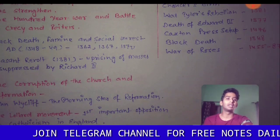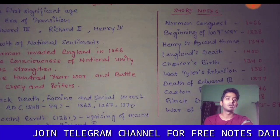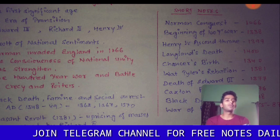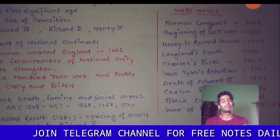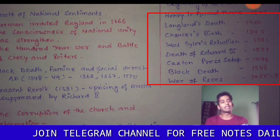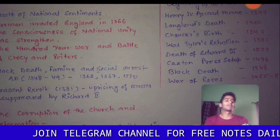Now here you can see some short notes. Norman Conquest happened in 1066. The beginning of the Hundred Years' War was 1338. Henry IV ascends to the throne in 1399. Langland's death happened in 1400. Chaucer's birth was 1340. Wat Tyler's Rebellion, or the Peasant Revolt, was 1381. Death of Edward III was 1377. Caxton's printing press was set up in 1476. Black Death was 1348, and the War of the Roses was in 1455.